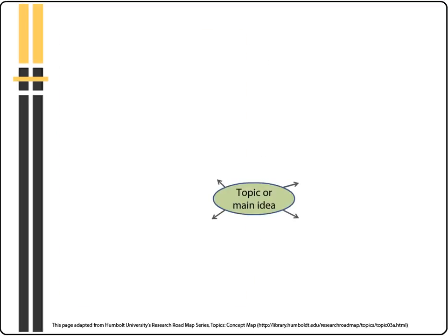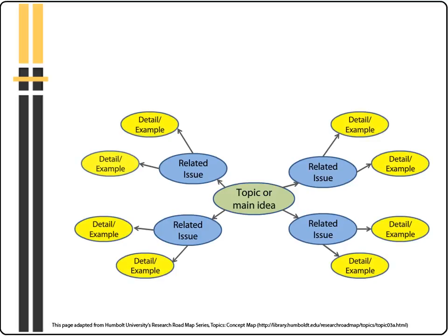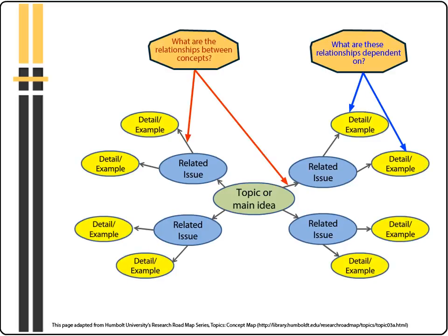Research is a creative process involving both analysis, in which you take things apart, and synthesis, in which you put things together. Creating a concept map is a visual way of analyzing your topic, and after it is completed it will help you to both synthesize a research question and give you the search terms to pursue it.